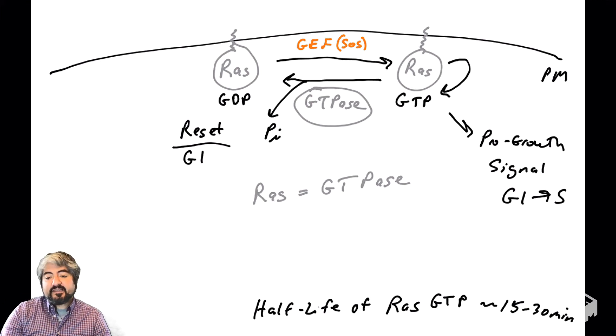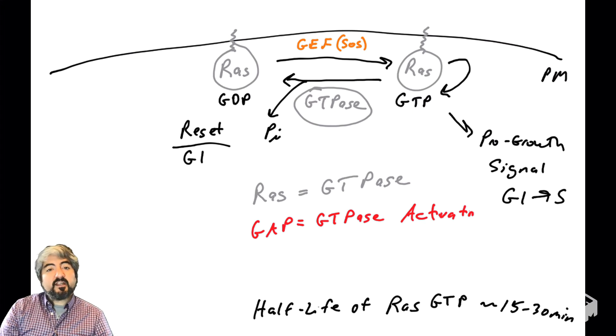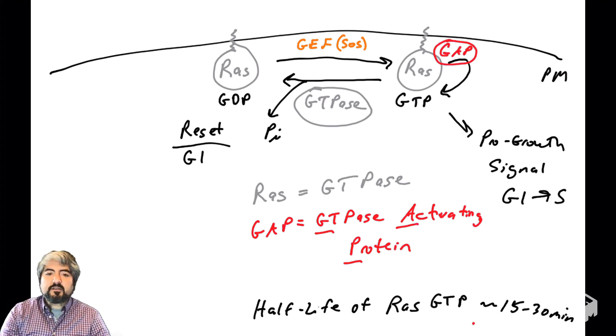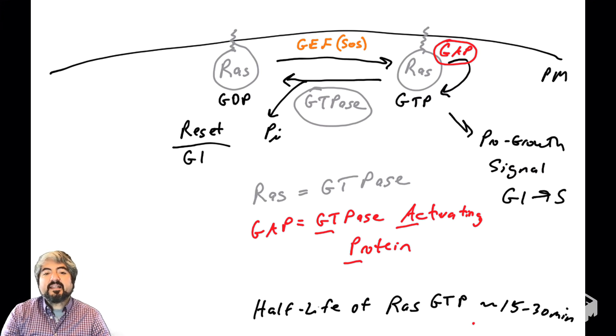RAS does get some help with another protein called a GAP. GAPs are GTPase activating proteins. So RAS is a GTPase, but it works much better in the presence of a GAP protein. GAPs will help stimulate RAS's GTPase activity, helping RAS reset itself. It's very important to understand this because we're going to talk about mutations in human cancers.